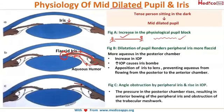Now this iris goes and blocks the angle. The pressure in the posterior chamber rises, resulting in anterior bowing of the peripheral iris, causing an obstruction of the trabecular meshwork. It is obstructed by the anteriorly bowed iris.